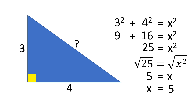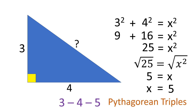Notice that the lengths of the sides of this triangle are all whole numbers: 3, 4, and 5. Having all whole numbers in the sides of a right triangle is rare, and so it has a special name. They are called Pythagorean triples.